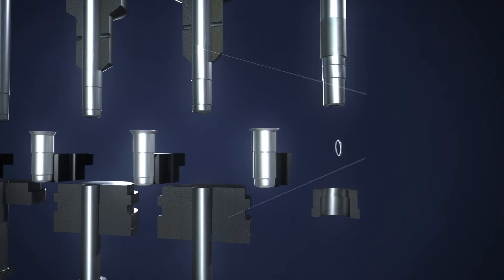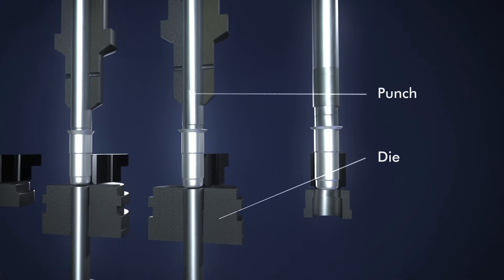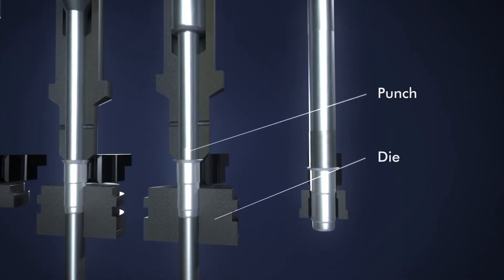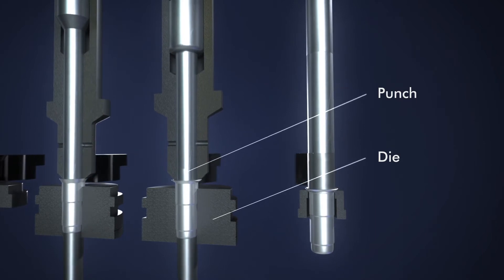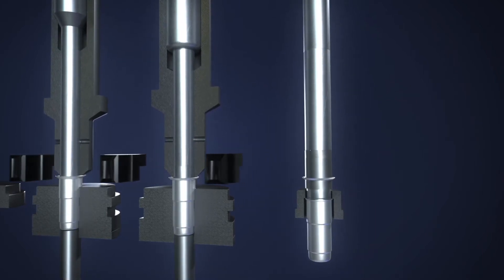The main forming tools in this process are a punch and a die. The contact areas are shaped to allow optimal material flow. Comprehensive calculations, and in many cases, computer-aided simulations are necessary to design the tools.